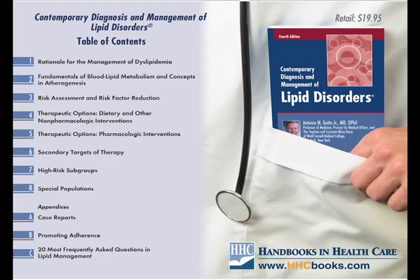There may be additional targets added in the future as we get more information about whether CRP should be a target of treatment. We may get data on agents which specifically target HDL-raising. Trials with cholesterol ester transfer protein inhibitors are underway. A trial with one such agent, torcetrapib, was stopped because of toxicity. Whether or not this approach will turn out to be feasible in the long run remains to be determined.